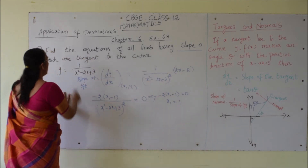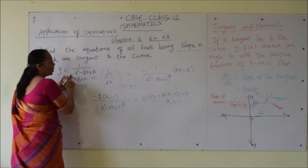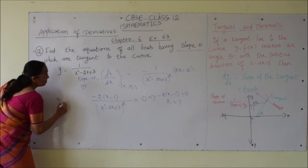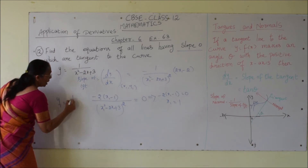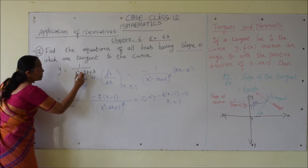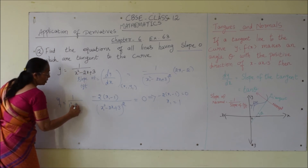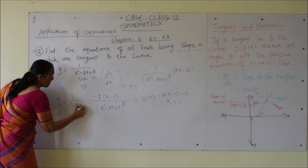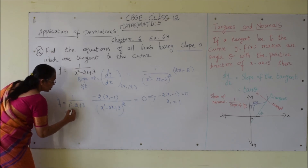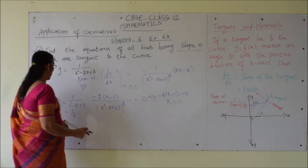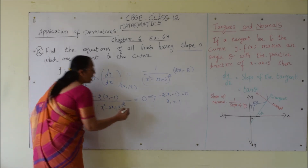When x1 equals 1, we find the y1 value. y1 equals 1 divided by (1 squared minus 2 times 1 plus 3), which is 1 divided by (1 minus 2 plus 3) equals 1 divided by 2. So the point on the curve is (1, 1/2).